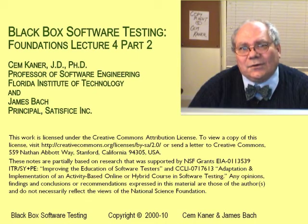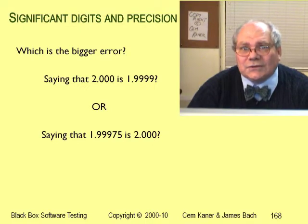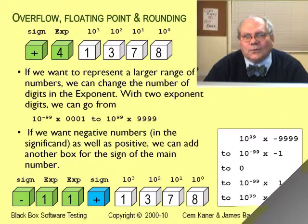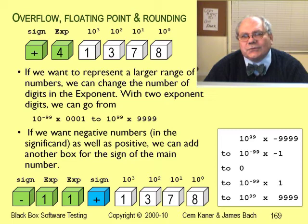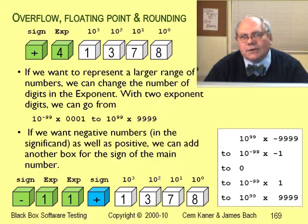Our challenge is that with floating point, we can't tell what the real difference is because we can't store enough digits. We can add more precision to the number by storing more digits in the mantissa. When we distinguish between single precision arithmetic and double precision and quadruple precision, mainly we're distinguishing between the number of digits in the mantissa.